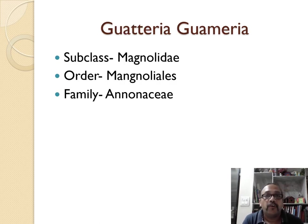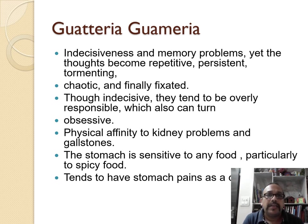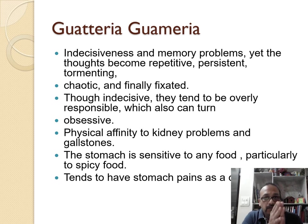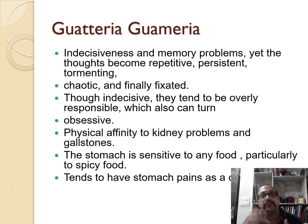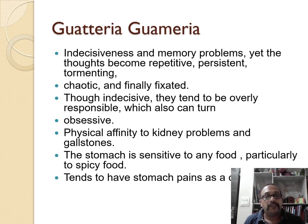The next remedy is Guetteria gummeria — same subclass, same order, same family. This is a very short, small, not fully proved remedy with only few symptoms. There is indecisiveness and memory problems, yet thoughts become repetitive, persistent, and tormenting. They are very indecisive and their memory is very weak. However, their persistent thoughts make them very fixed — fixed ideas. A lot of obsessive-compulsive disorders will be seen in this whole subclass. Physical affinity to kidney problems. The stomach is very sensitive to food, particularly spicy food, with concomitant stomach pains in most complaints.